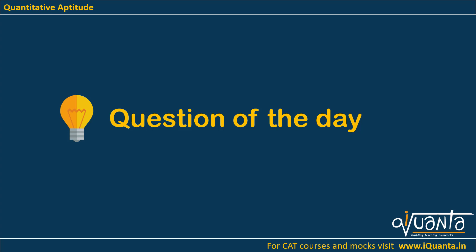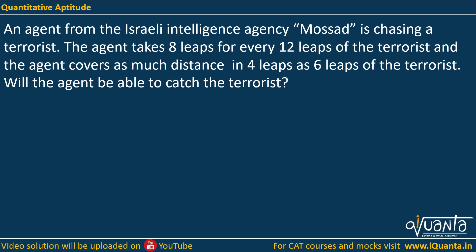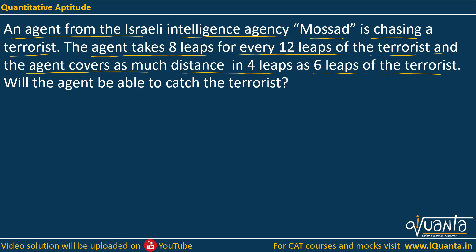Hello everyone, we'll be solving a question based upon time, speed, and distance in this video. The question is: an agent from the Israeli intelligence agency Mossad is chasing a terrorist. The agent takes 8 leaps for every 12 leaps of the terrorist, and the agent covers as much distance in 4 leaps as 6 leaps of the terrorist. Will the agent be able to catch the terrorist?